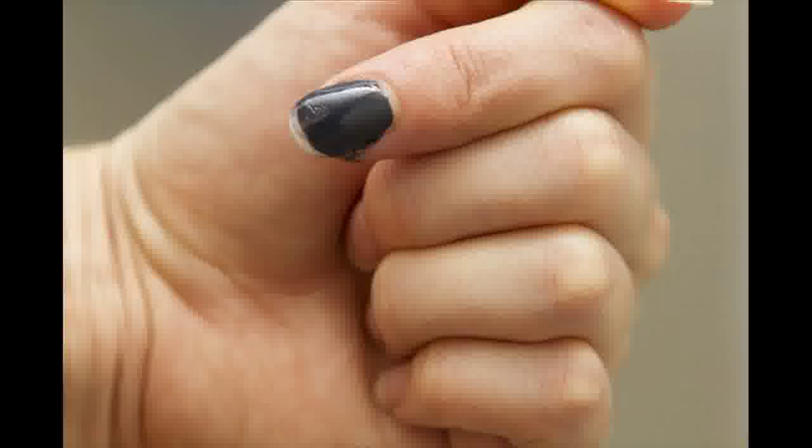In a gel manicure, cuticles are pushed, and nails are filed and buffed. A base coating of light gel is applied to the nails, and then the nails are placed under a UV lamp until the gel hardens.